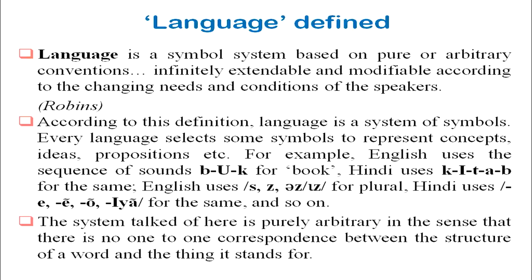According to this definition, language is a system of symbols. Every language selects some symbols to represent concepts, ideas, and propositions. For example, English uses the sequence of sounds B-U-K for 'book,' while Hindi uses K-I-T-A-B, 'kitab.' Similarly, English uses sounds like S, Z, or IZ for plural formation — as in books, dogs, roses.